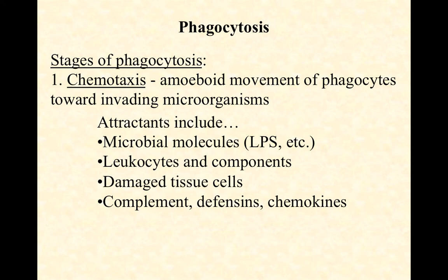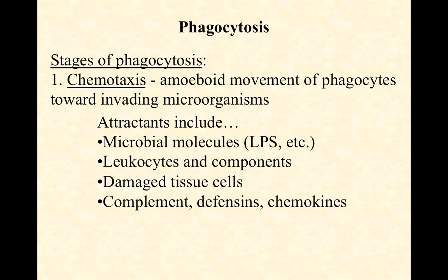Leukocytes — white blood cells — and their components also serve as attractants. White blood cells have a certain lifespan; after a few rounds of phagocytosis, they end up dying and lysing, leaving fragments everywhere. If you get an infected wound and start seeing pus, a lot of what you're seeing are leukocyte components. As those diffuse away from the infection site, they create a gradient drawing fresh phagocytic white blood cells to the location. Damaged tissue cells work the same way.